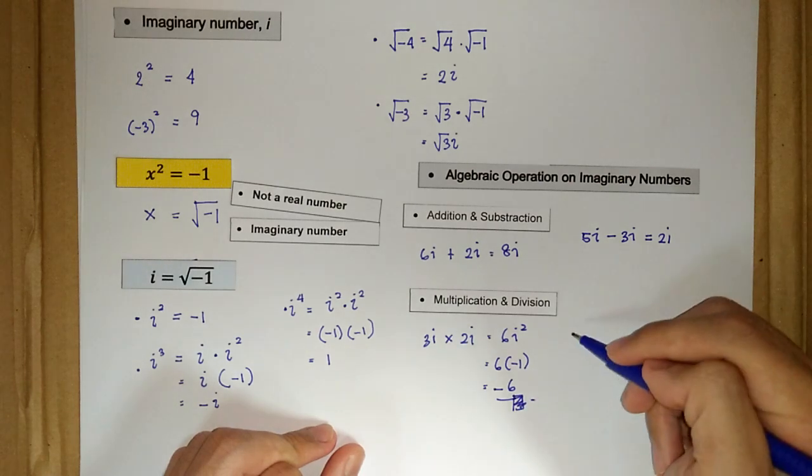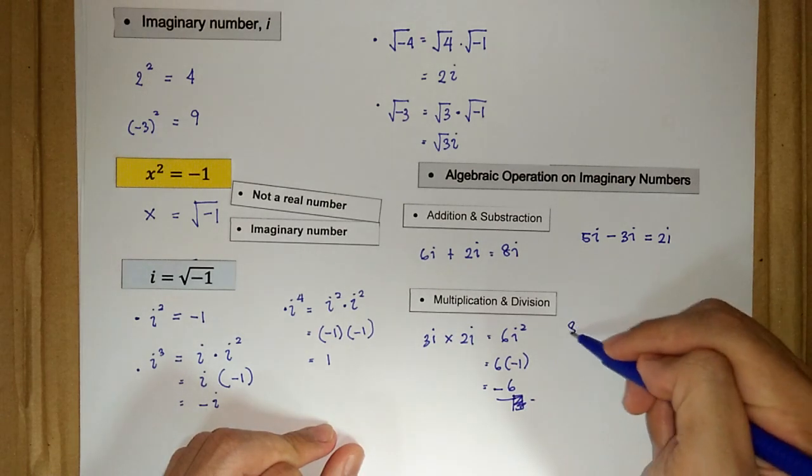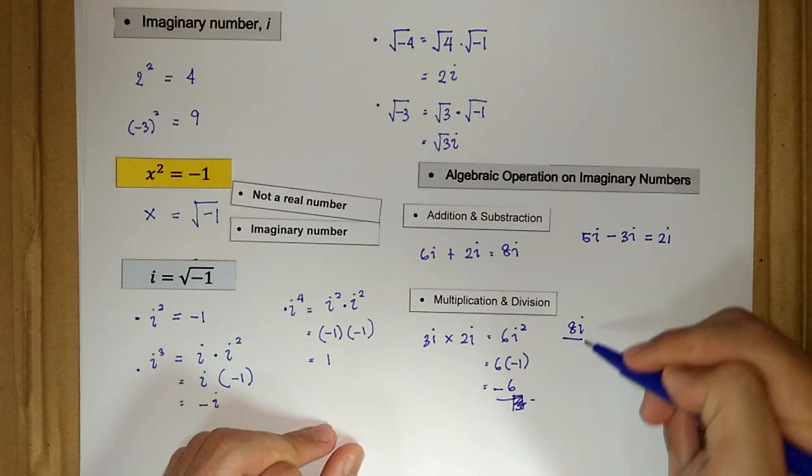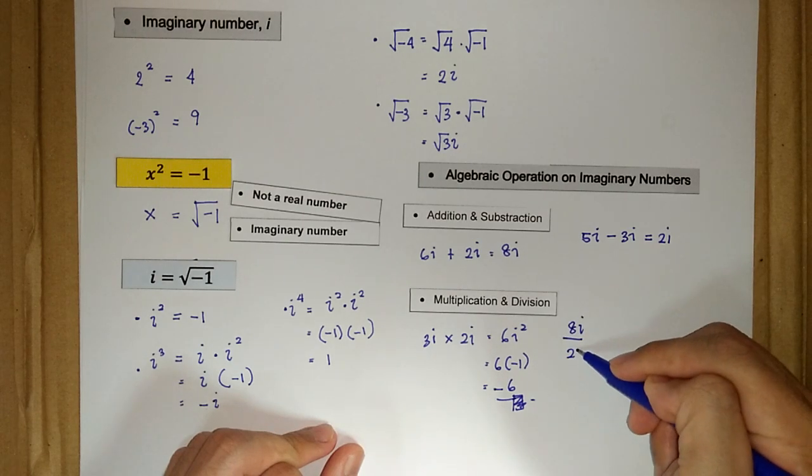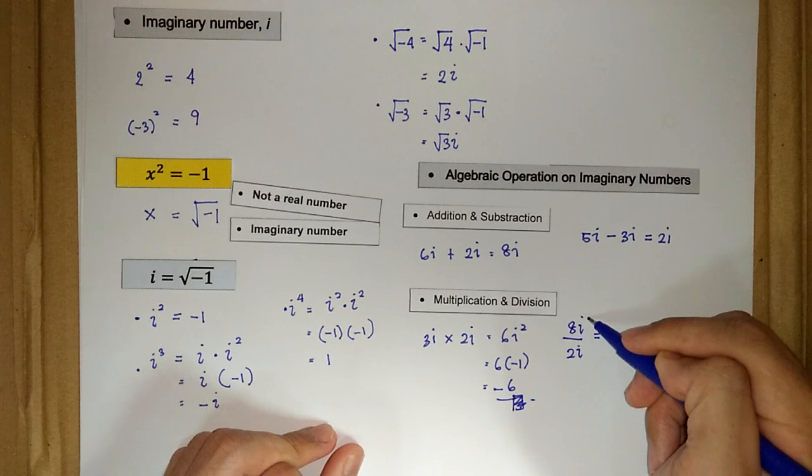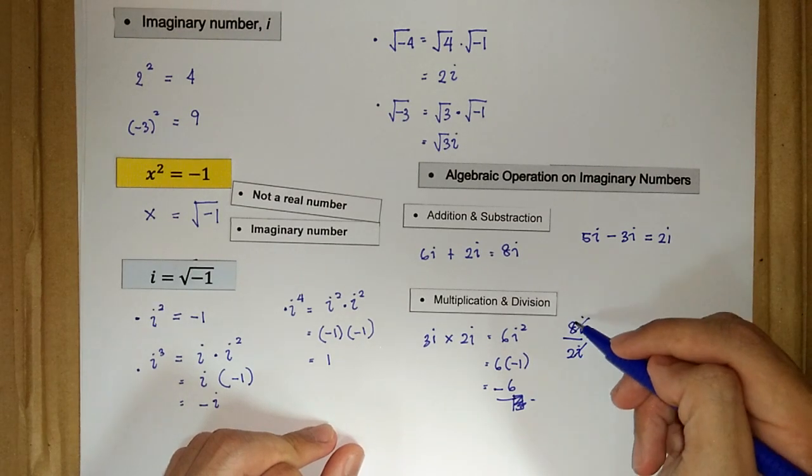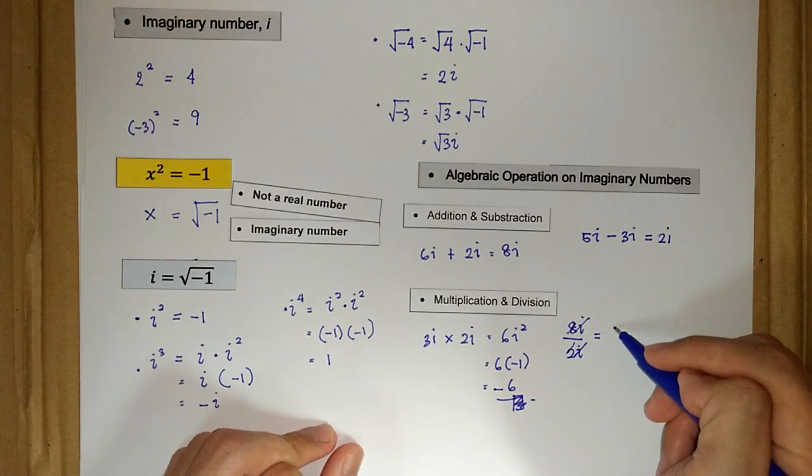We also have 8i divided by 2i. The i cancels out, and 8 divided by 2 equals 4.